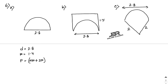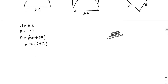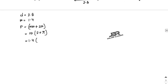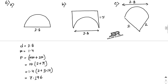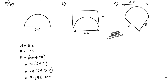Factoring out r: perimeter equals r times (2 + pi), where r equals 1.4 and pi equals 3.14. So 2 plus 3.14 equals 5.14, and 5.14 into 1.4 equals 7.196 centimeters. That is the perimeter for shape A.